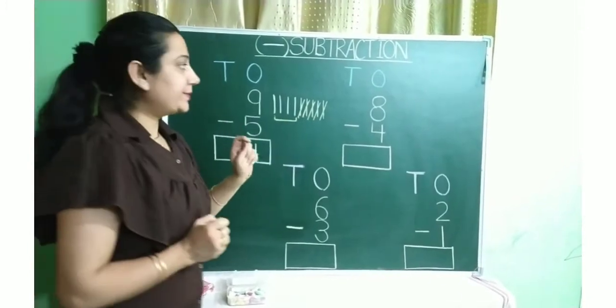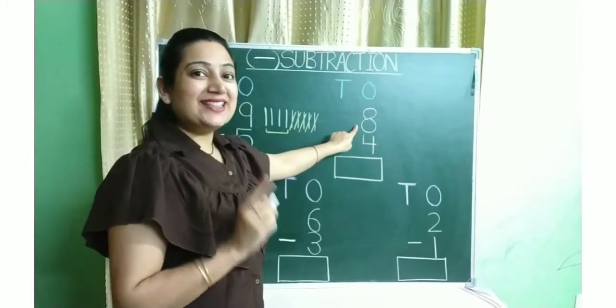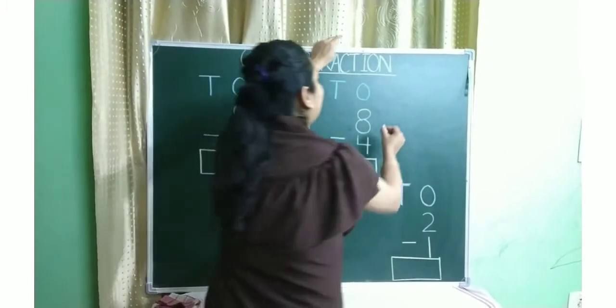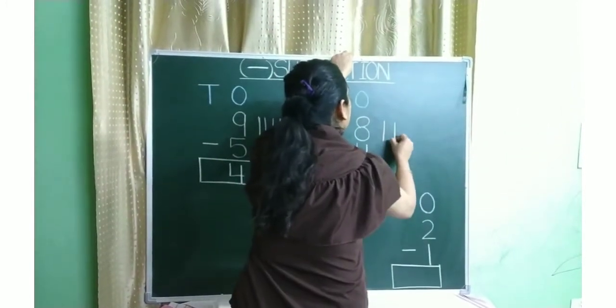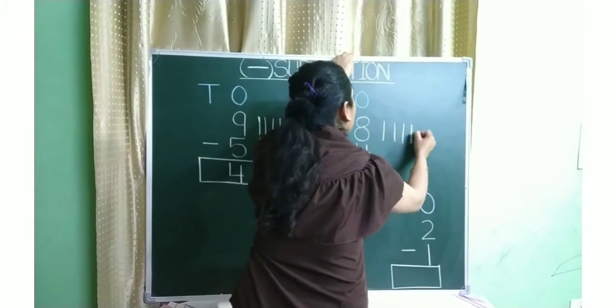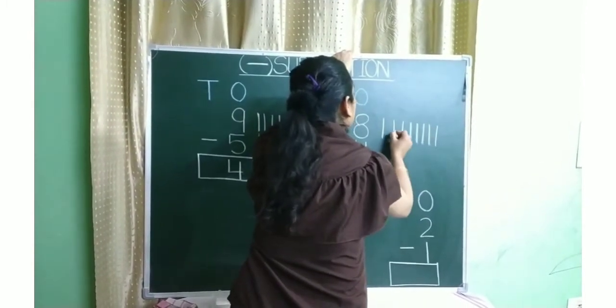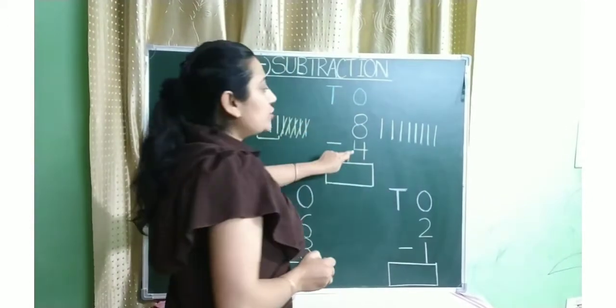Now we will do another one. Which number is this? Number 8. So we will make 8 standing lines. 1, 2, 3, 4, 5, 6, 7, 8. Which number is this?